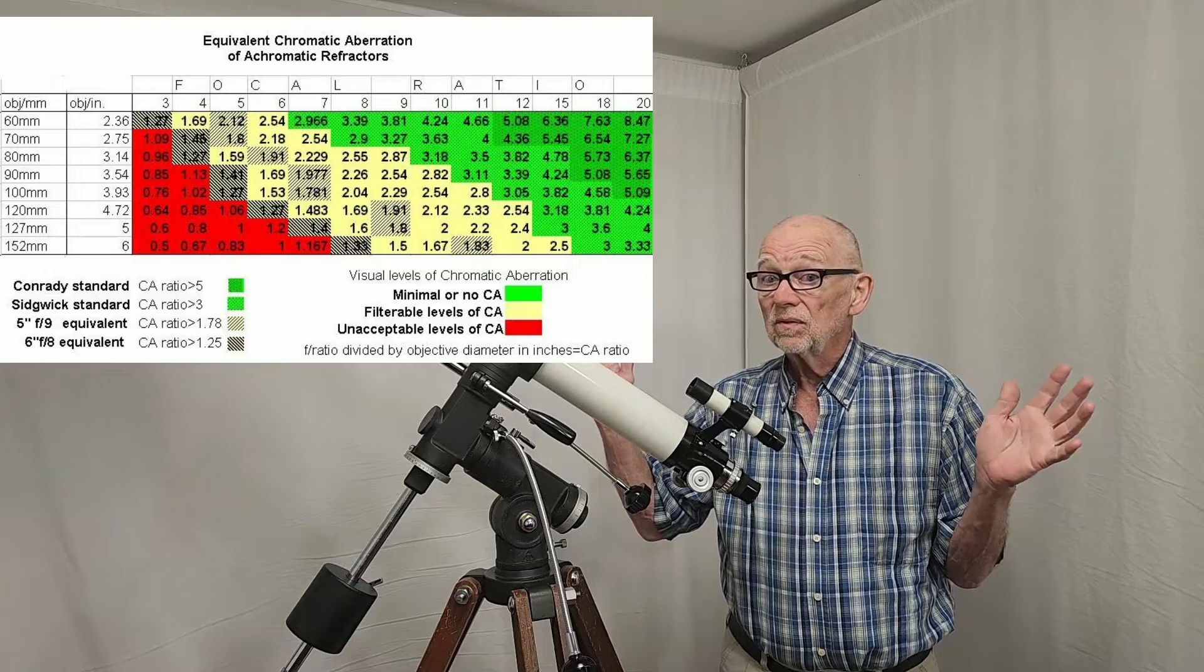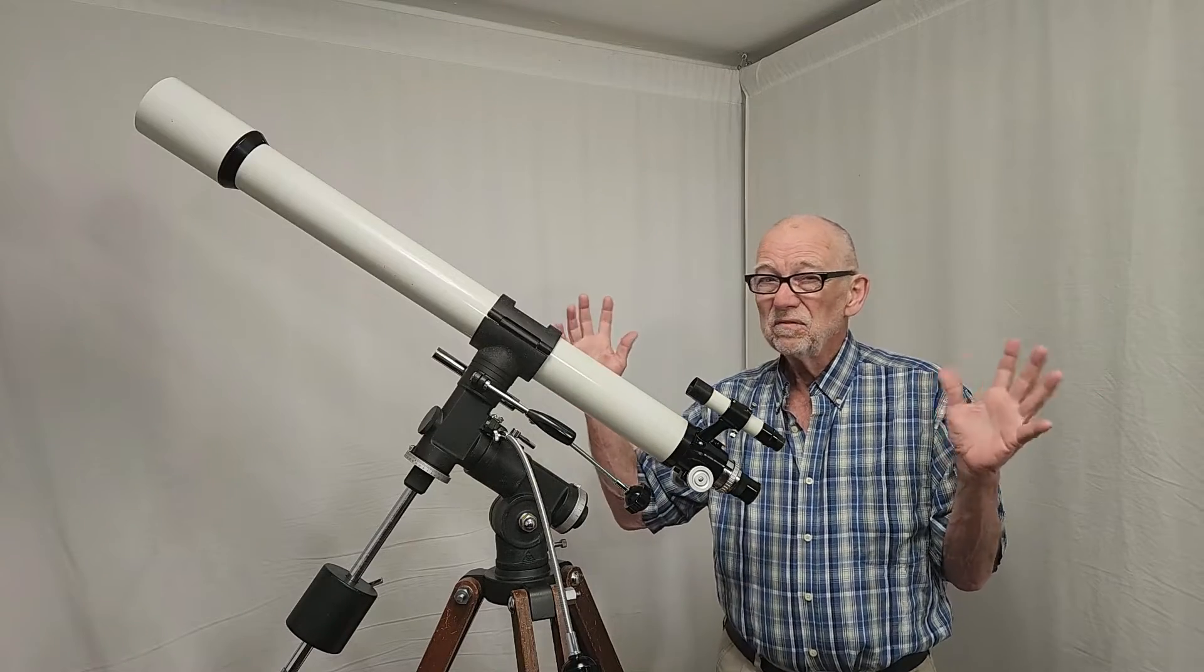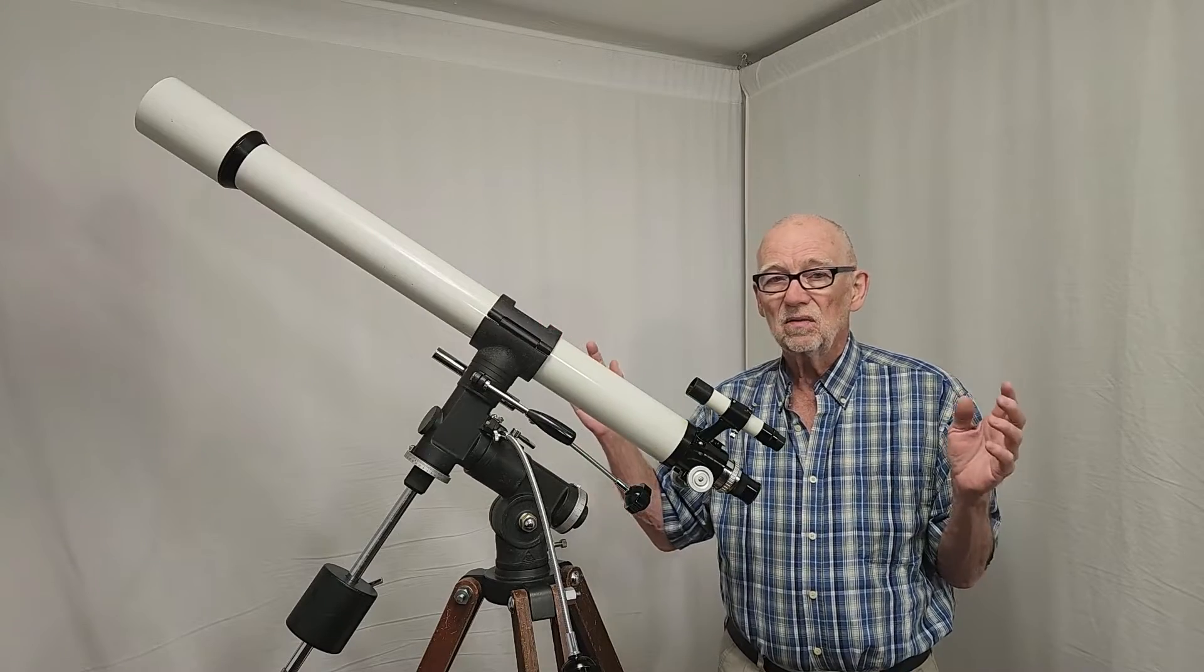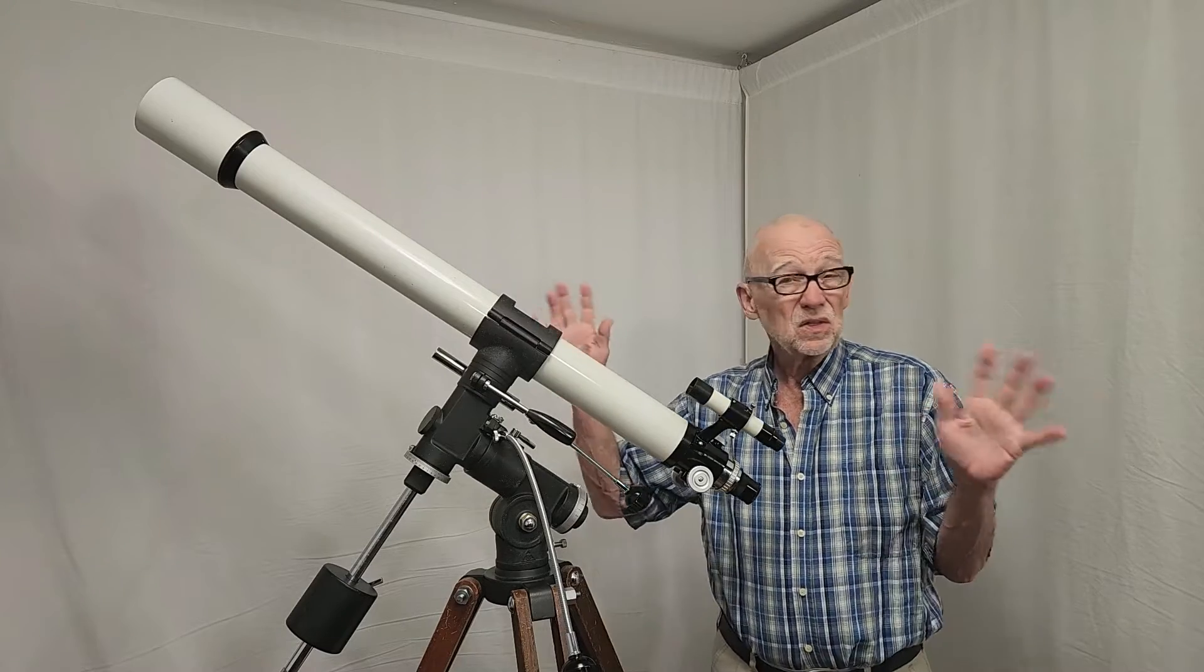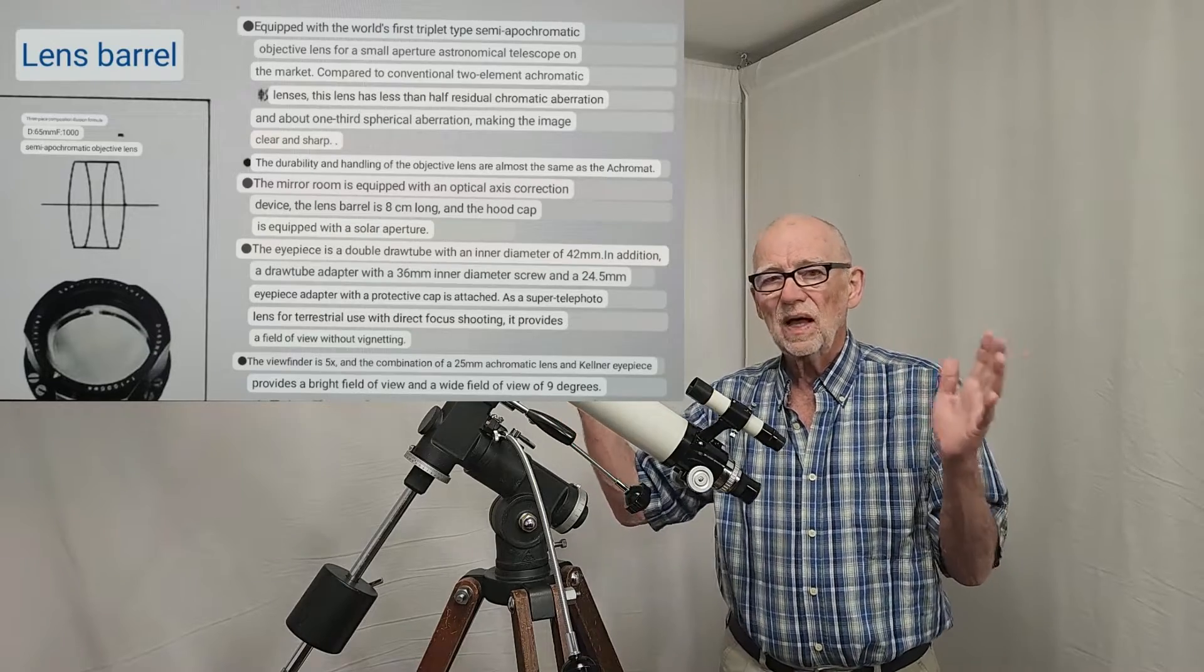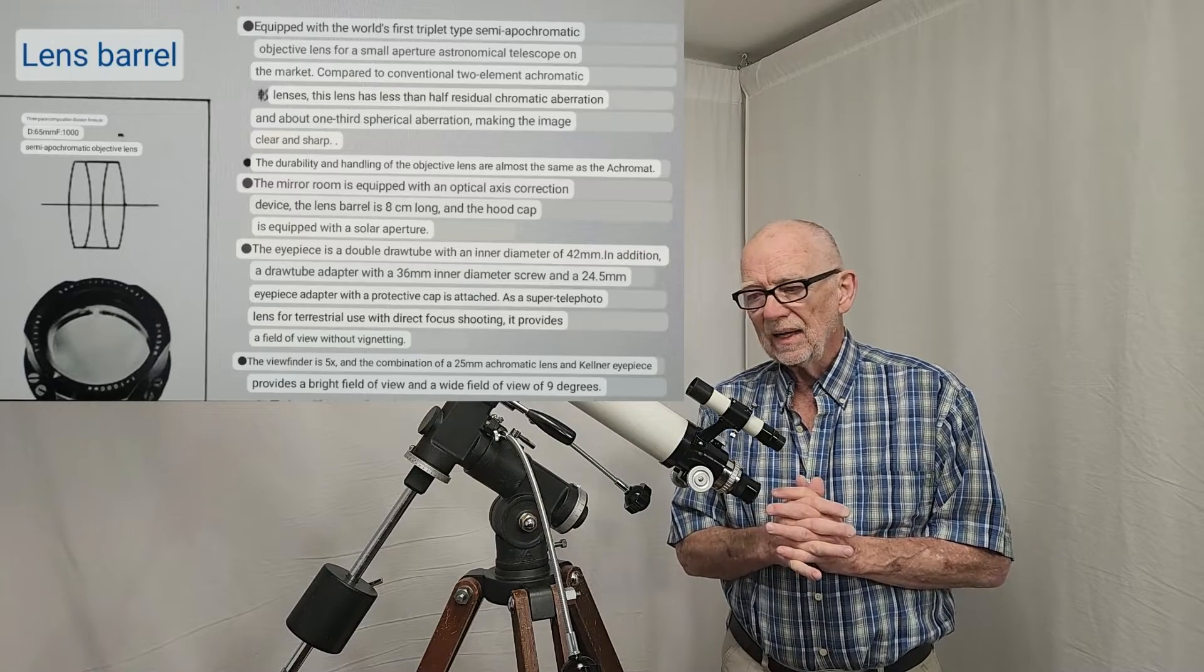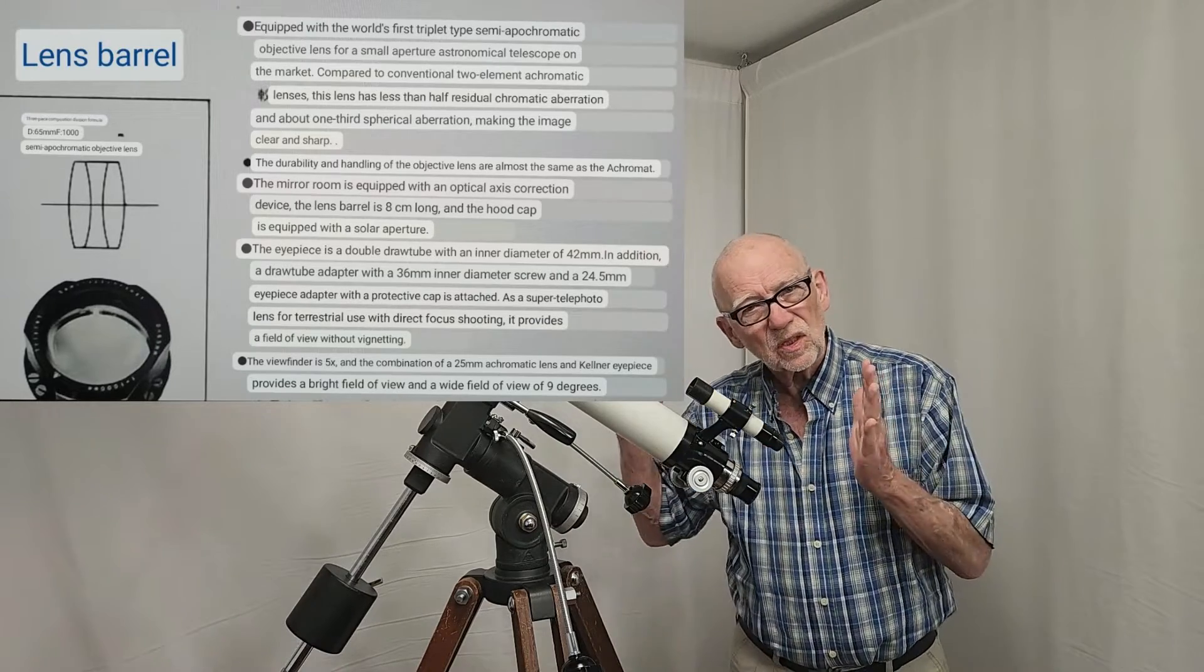They're trying to make a statement here, folks. They make a triplet, a really fancy sophisticated piece of glass, three glass elements. This is not fluorite, remember. This is just three regular types of glass put together to make a triplet, and it's got less color.